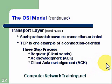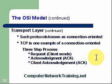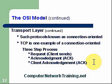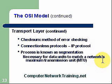Such a protocol is known as connection-oriented. Our TCP protocol is what we call a connection-oriented protocol. Before we start sending data out, we've got to make sure that we have somebody receiving it, and then we can also control that flow of data. This is a three-step process: there's a request made, the client sends back acknowledgments, then there's an acknowledgment to the acknowledgment, and then the session is started and data begins to transfer. This is also called a three-way handshake.